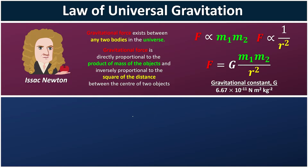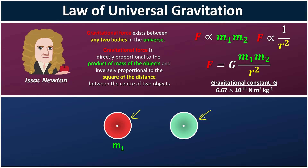So in short, whenever we have two bodies — let's say this is you with mass M1 and this is your crush with mass M2 — and both of you are separated by R meters, then you will experience a gravitational force due to the existence of your crush, and your crush will experience exactly the same force due to the existence of you.